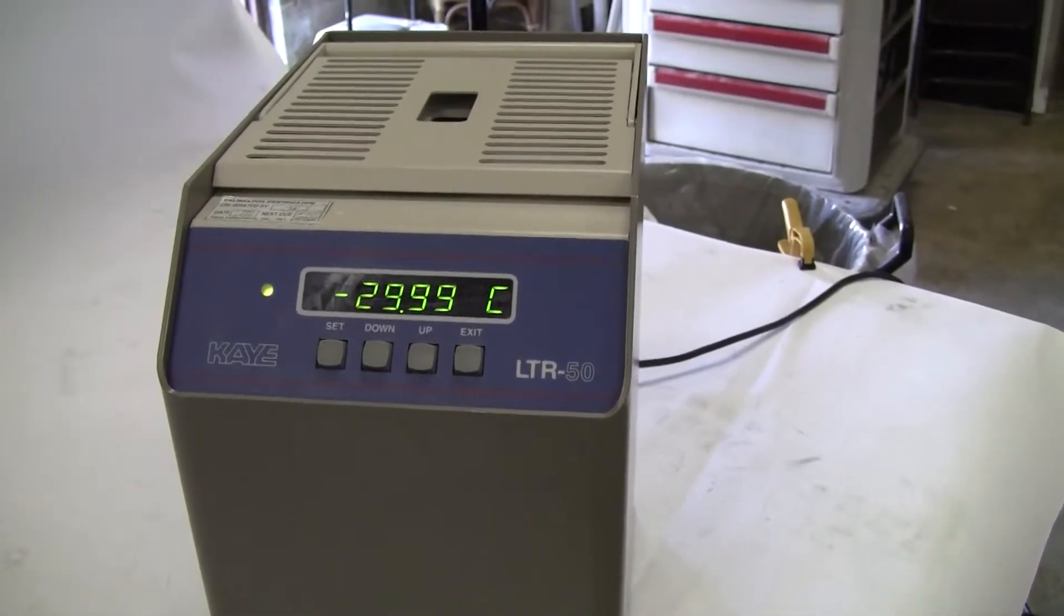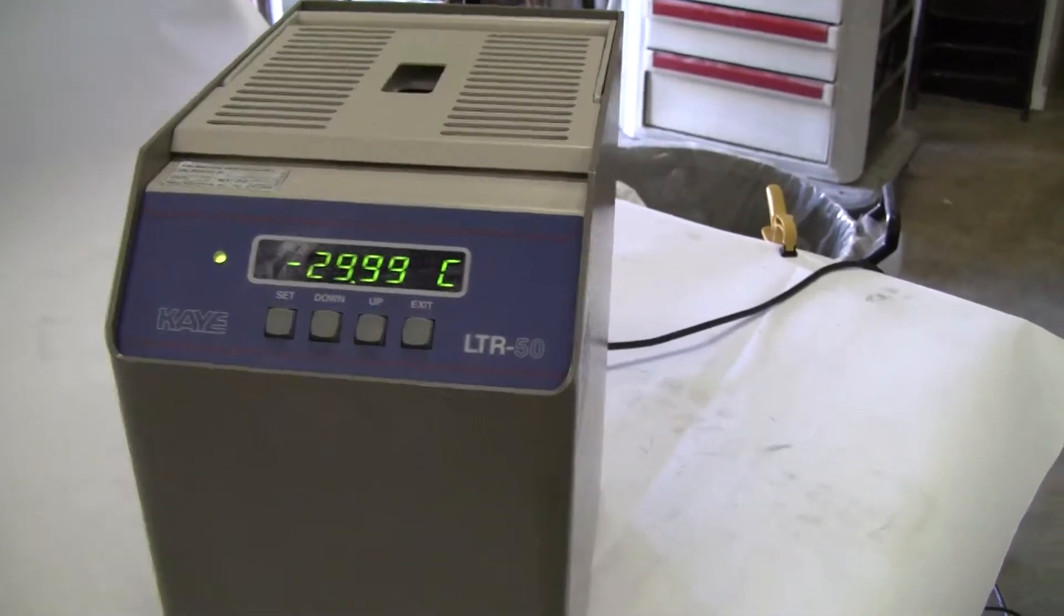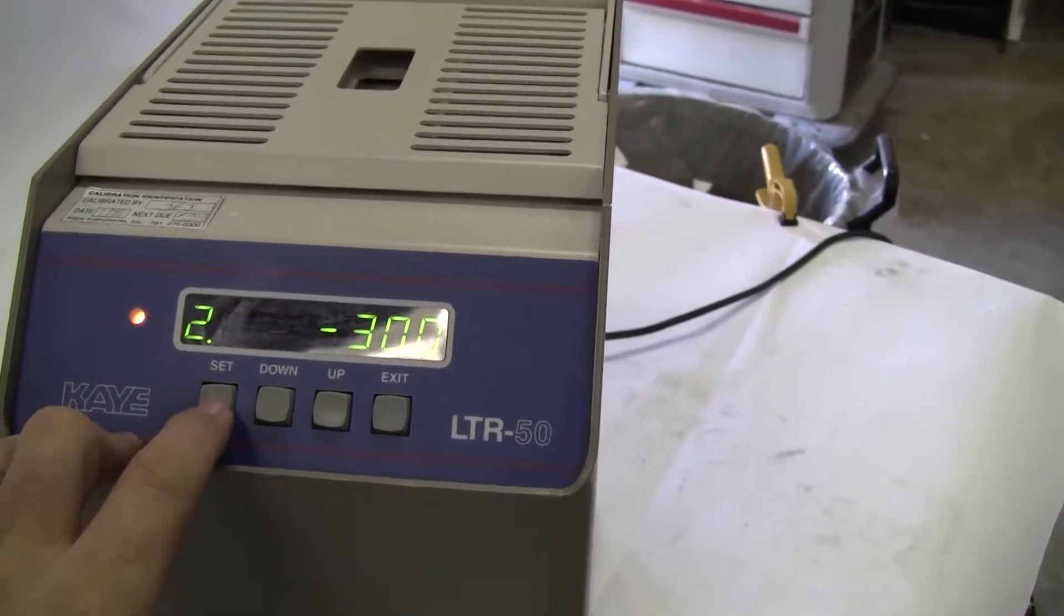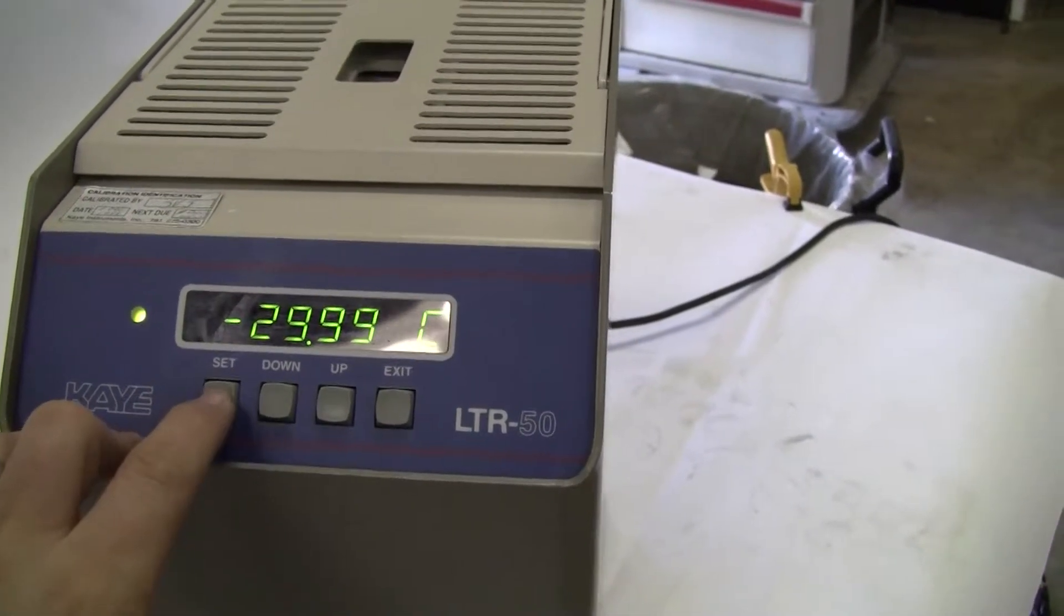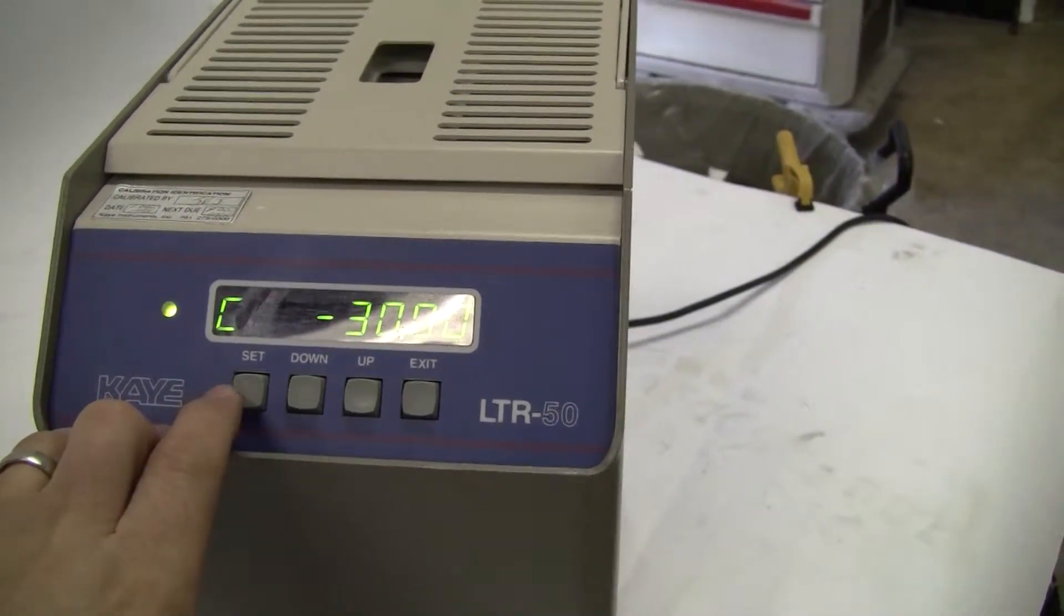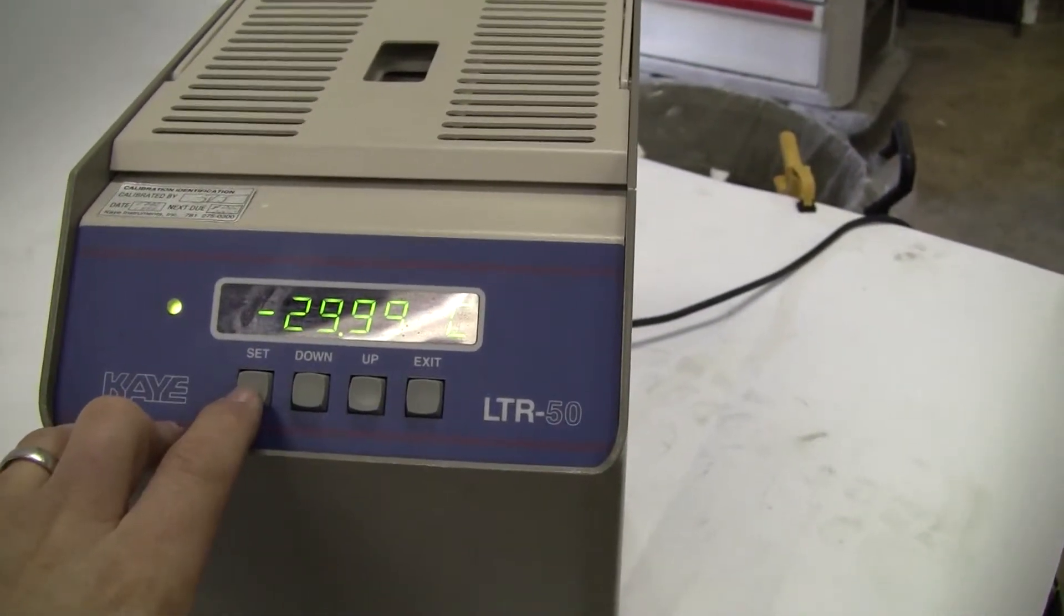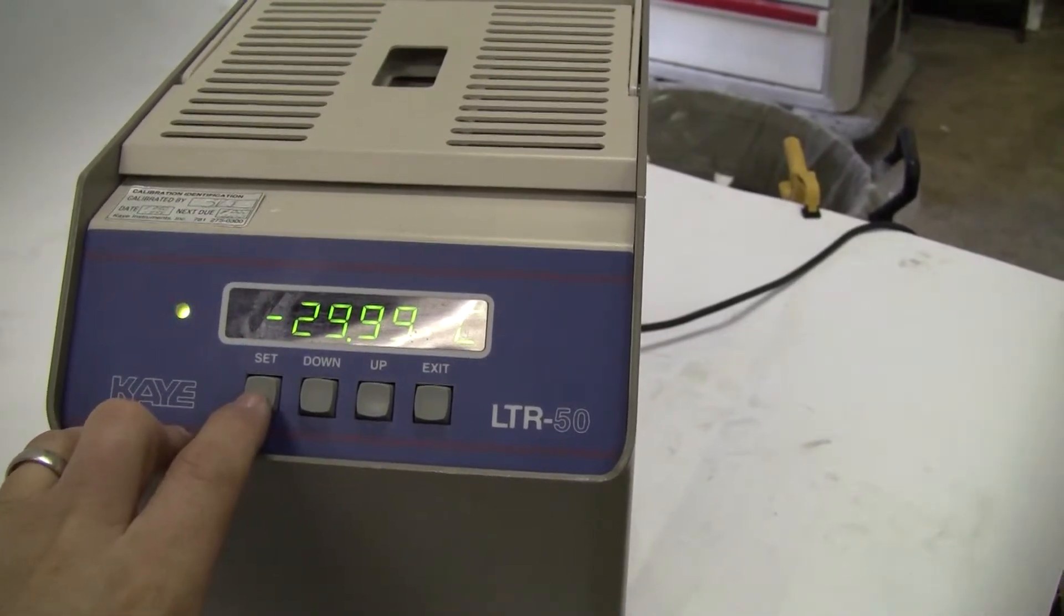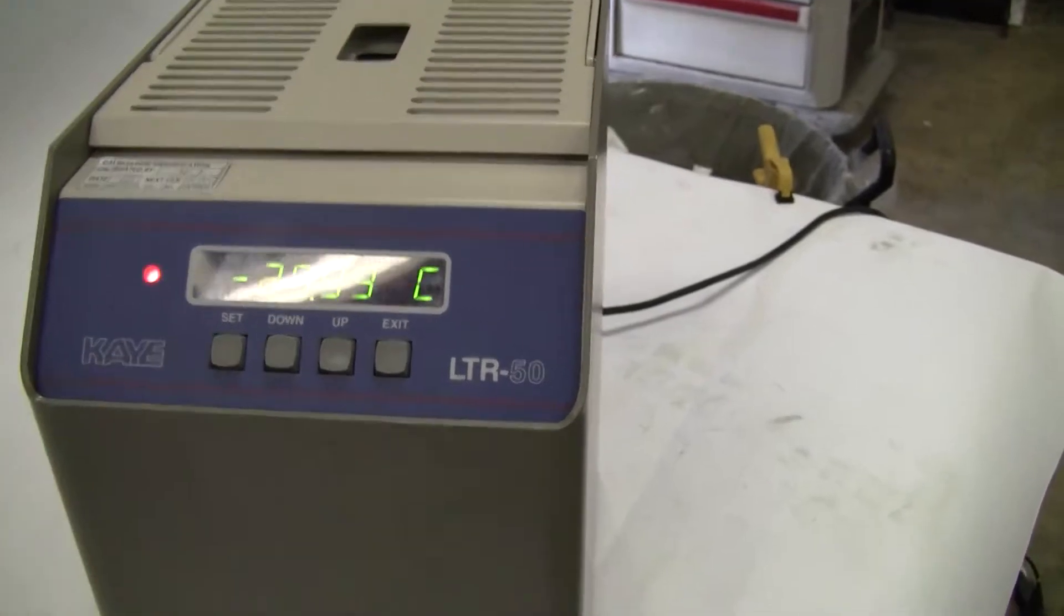It's going through a quick program where it's down at minus 29 and you can see the set point. It's the second set point that we set in there minus 30, the second condition. So that's what it's ramping down to, or I should say it has ramped down to. It's going to hold quite nicely, indicating it's at set point.